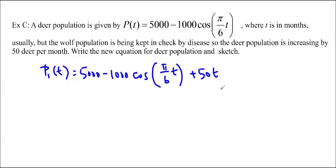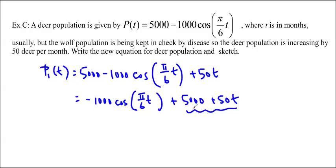So now we have a new function like this, and if you think about how cos works, I can rewrite it as follows. This is like negative 1,000 cos pi over 6t plus 5,000 plus 50t. And this is actually going to act as the axis for the new function. I'm going to go ahead and graph that for you on a graphing calculator system.